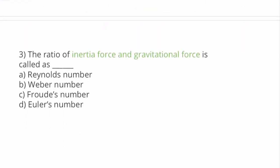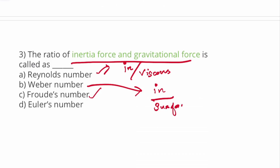The ratio of inertial force to gravitational force is Froude number. It is the ratio of inertial force divided by viscous force. Reynolds is more related to viscous. Next Weber number, it is defined as ratio of inertial force by surface tension. Then Euler number is the ratio of inertial force by pressure force.